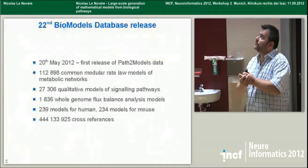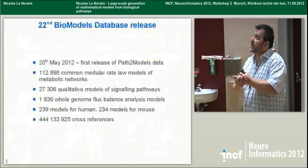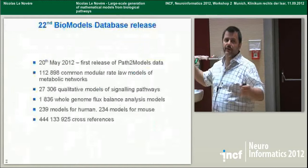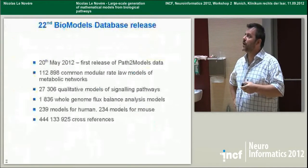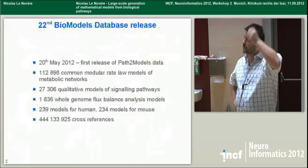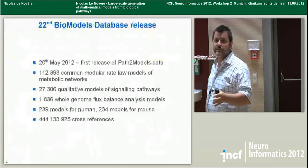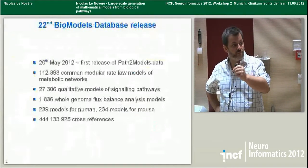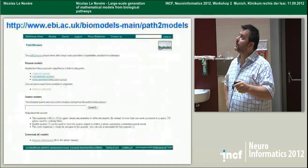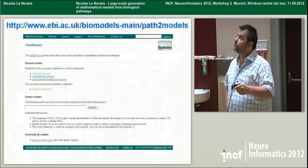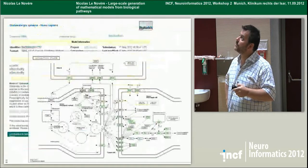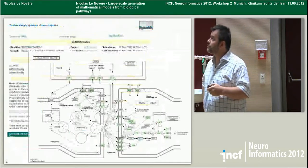We released the first version of the models in May with the 22nd release of the Biomodels database. We have big numbers: about 150,000 models representing more than 10 million reactions, and importantly they are annotated with 400 million cross-references that allow you to specifically identify which metabolite is which. If you go to Biomodels database, there is now a new branch called Path2Models where you can explore, browse, and search them — including by taxonomy. There's an entry for the glutamatergic synapse, with the graphical representation coming from KEGG.